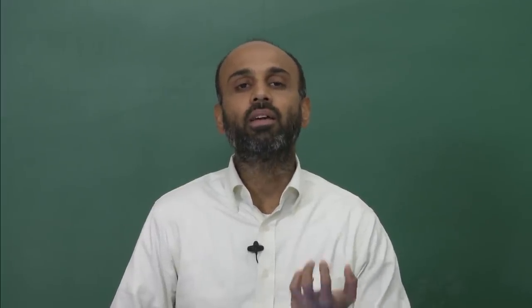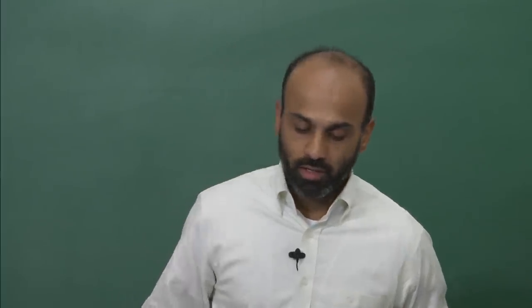For instance, what the other person is speaking — that can be a voice signal. To understand more about that, we need to process that signal suitably. For instance, we would probably like to suppress noise to make the voice clear, so it is easier for us to understand what the voice signal is conveying. There are a whole lot of processing operations that can be carried out on a signal. So we are going to consider time-varying signals, or signals which are a function of time — these are known as time signals.